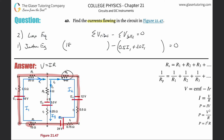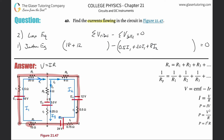Continuing through point B, we hit another resistor. Now it's not I1 anymore — it's I2 — so that's 8·I2 in the falls category. Traveling further, we reach a battery going from negative to positive, so that's a potential rise of 12 volts. Then still in the direction of I2, we pass through another resistor: 0.5·I2 in the falls category.